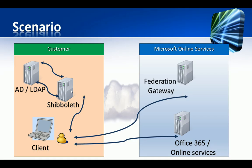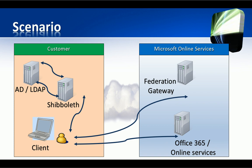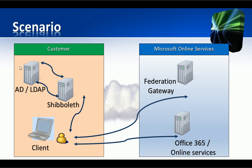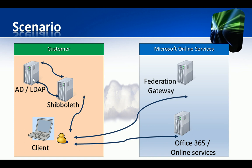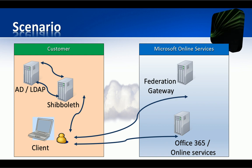First of all, let's give a look at the scenario we are going to implement. We have our network on the left, with a user's directory that could be Active Directory, OpenLDAP, or another one that is able to be exposed through Shibboleth.